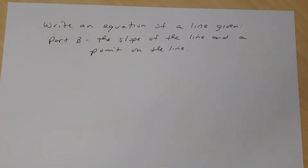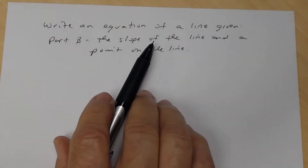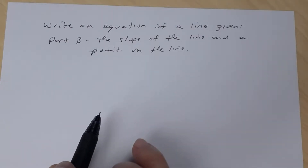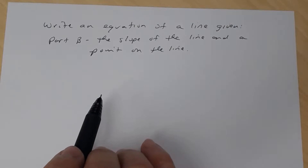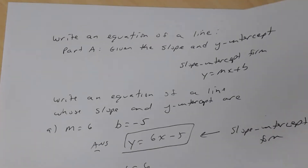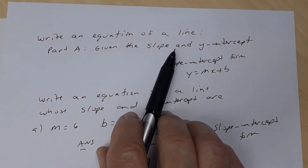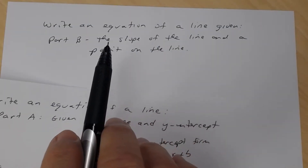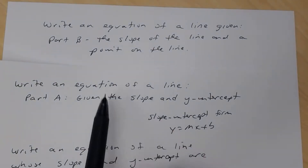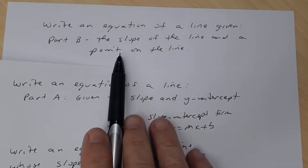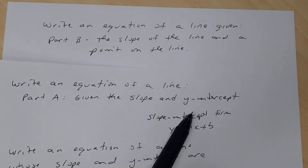In this lesson, we're going to write an equation of a line where in Part B, the slope of the line is given and a point on the line is also given. In Part A, you wrote an equation of a line where the slope and the y-intercept were given. This time in Part B, you're given a point on the line rather than just a y-intercept.